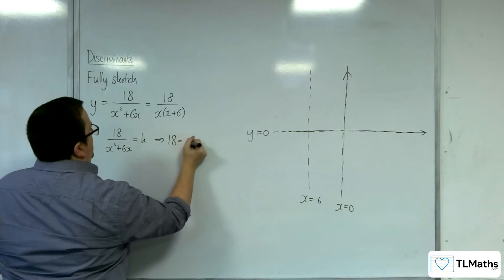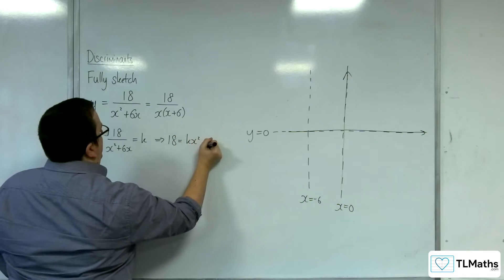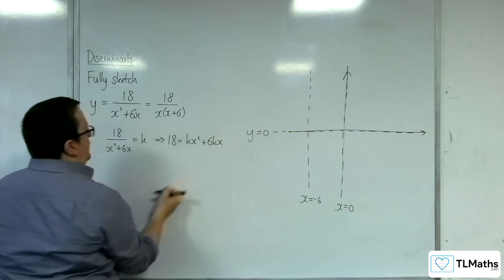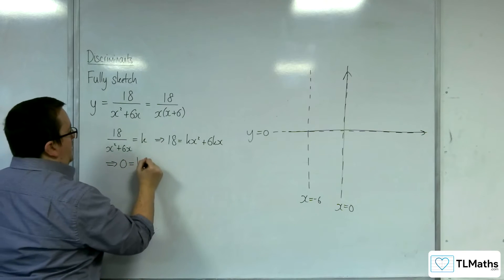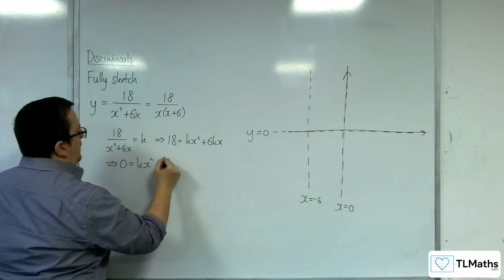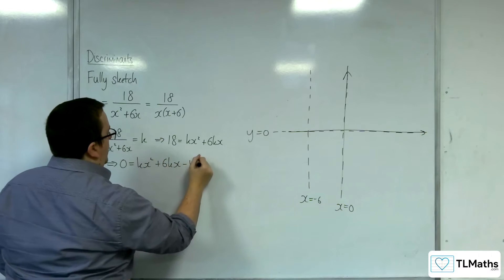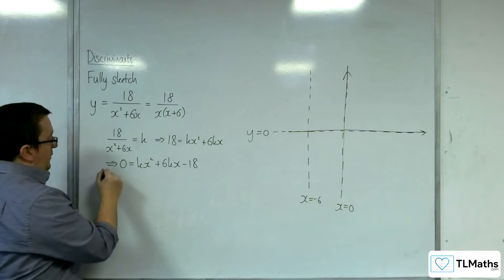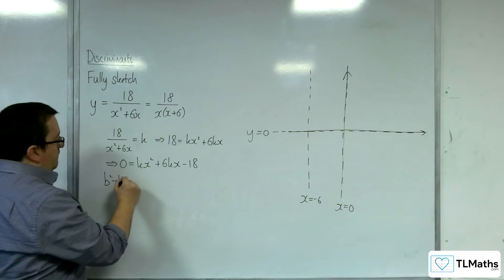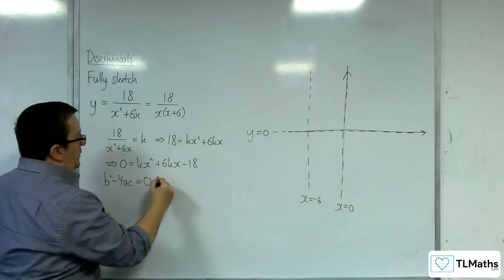So 18 is going to be equal to kx-squared plus 6kx. Moving everything onto the right-hand side, kx-squared plus 6kx, take away 18. Now I'm going to use the discriminant. Put it equal to 0.